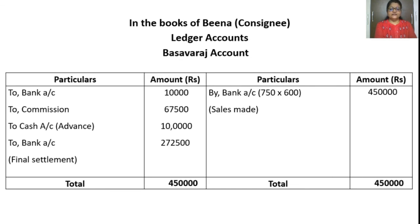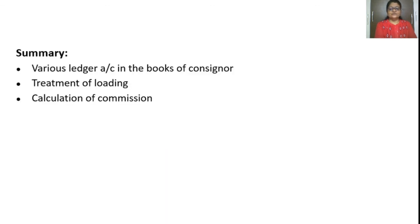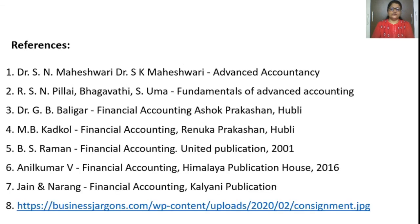In the books of Bina — the consignee — you can see the Basav Raj account (consignor account). For the consignor, goods sold for Rs. 4,50,000 are shown. From that, deduct expenses of Rs. 10,000, commission due of Rs. 67,500, and advance of Rs. 1,00,000. The bank draft — the total amount sent to the consignor as settlement — is Rs. 2,72,500. So with this, we have discussed the treatment of loading when goods are sent at invoice price. We are going to close today's class. Thank you.